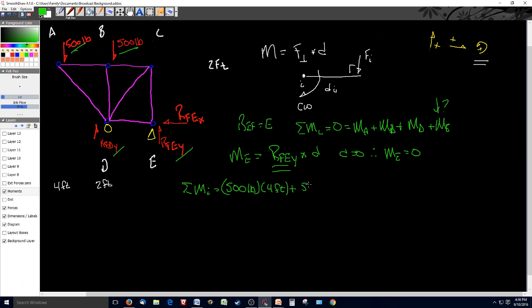plus the moment at B, which is 500 pounds, times the distance perpendicular to the force from E, or force B from E, which is two feet,